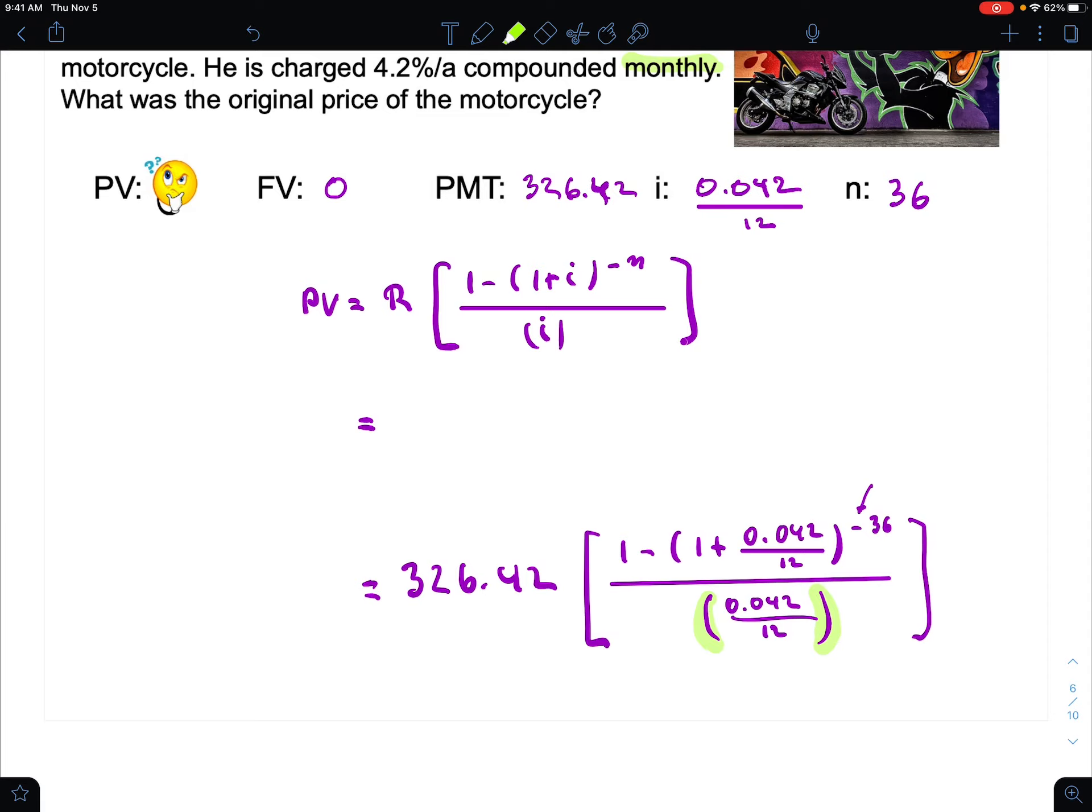So how do you plug this in? I would plug in the top part, so I would start here. I would say 1 minus, bracket, 1 plus this divided by this, close bracket, to the negative 36. Then I would press enter.